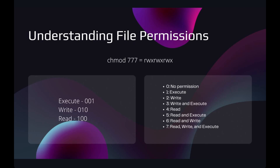This is why we use 7 in chmod 777. The first 7 represents the owner of the file — the owner has rwx permissions. The next 7 belongs to the group — the group also has rwx permissions. And finally, the other users also have rwx permissions. That's what chmod 777 means.